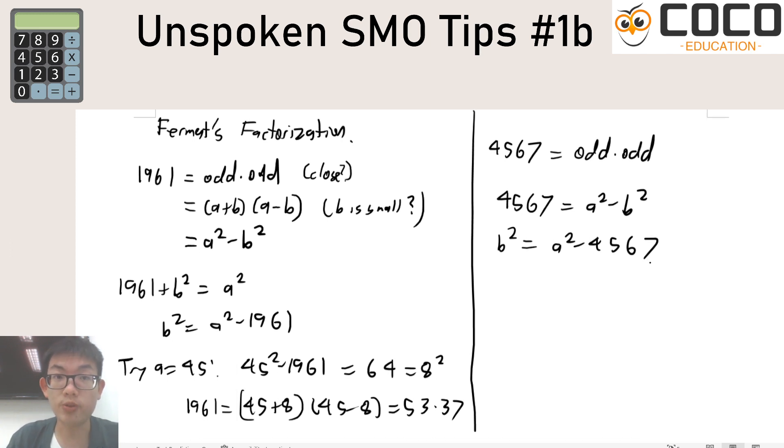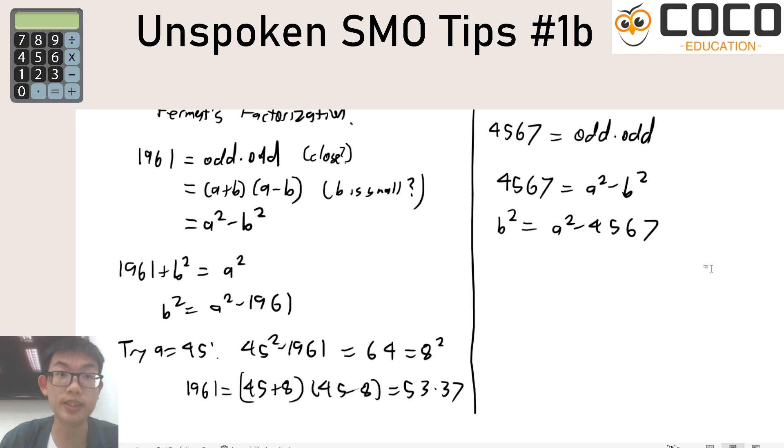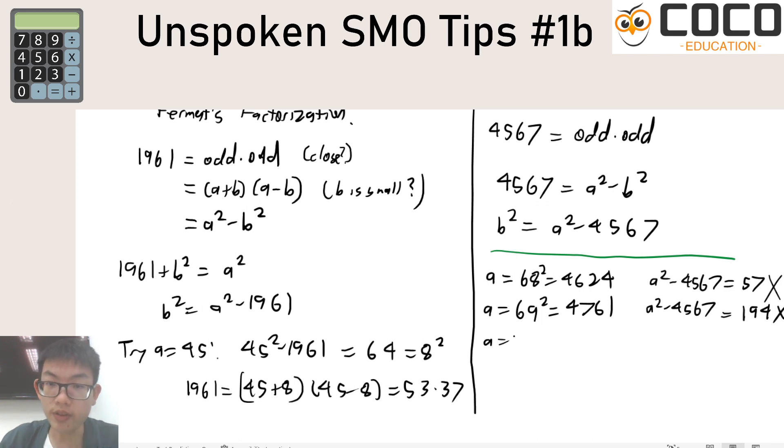Now the simplest way to apply this Fermat factorization to rule out some possibilities is simply to test the next few. So let's say that you have found the nearby square which is 68 squared, then a squared minus 4567 would be equals to 87 which is not a square. If we use 69 squared which is 4761, subtract 4567 you get 194 which is not a square. If let's say we do one more, a 70 squared which is 4900, then a squared minus 4567 is 333 which is also not a square.